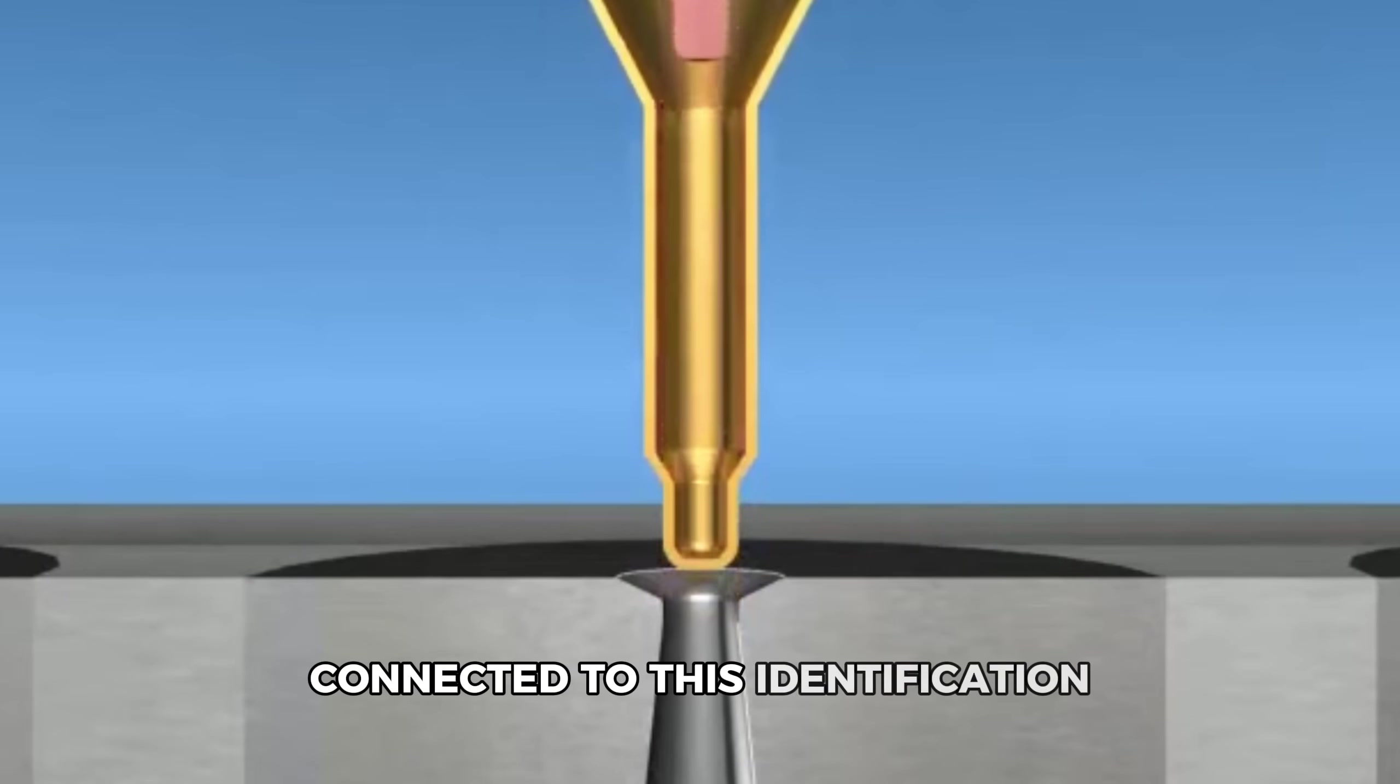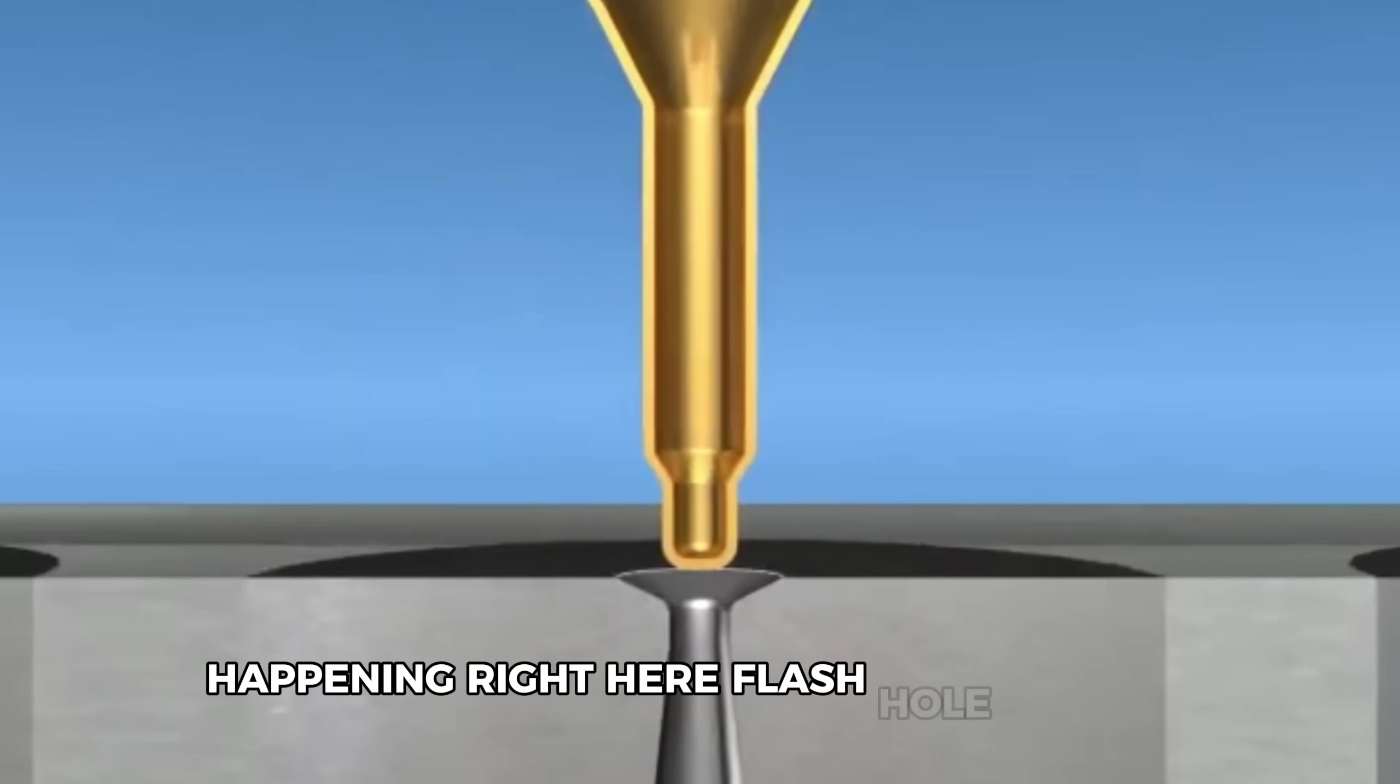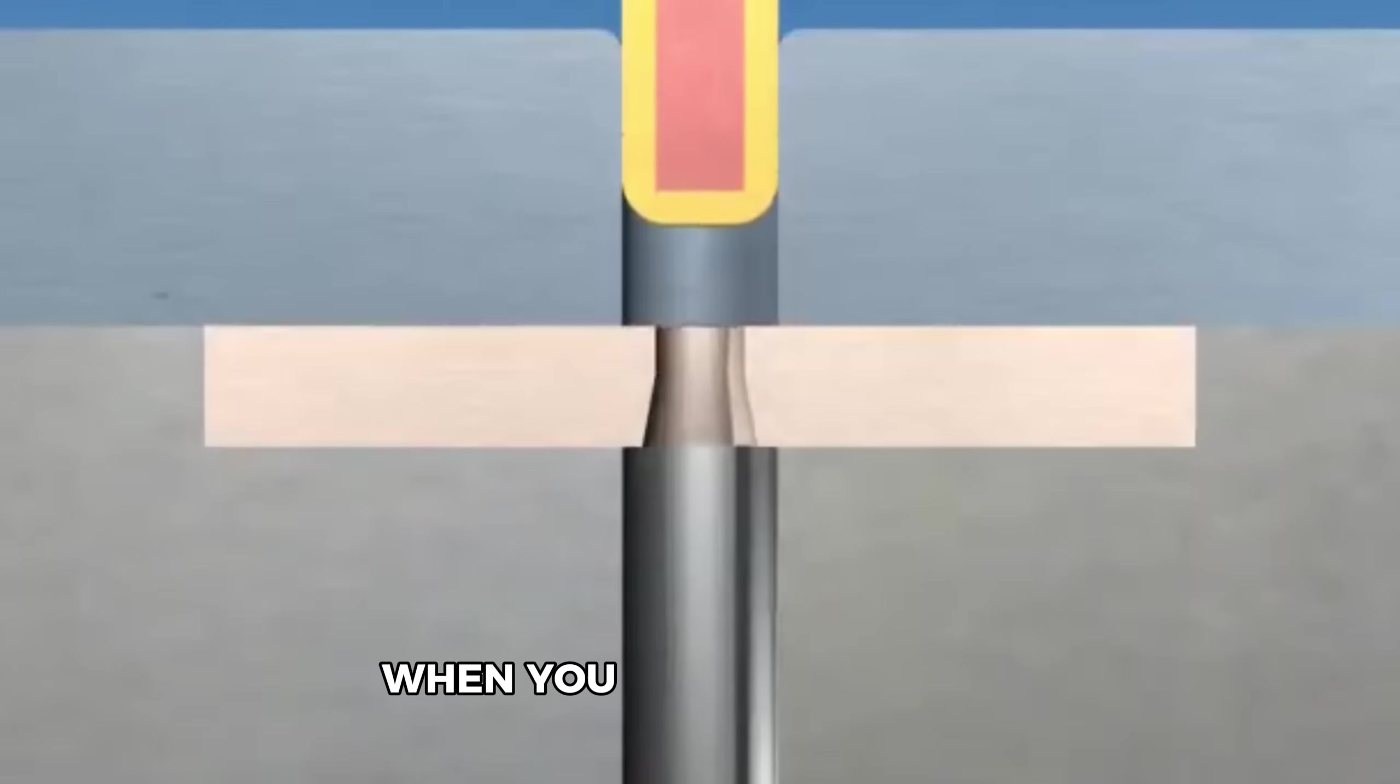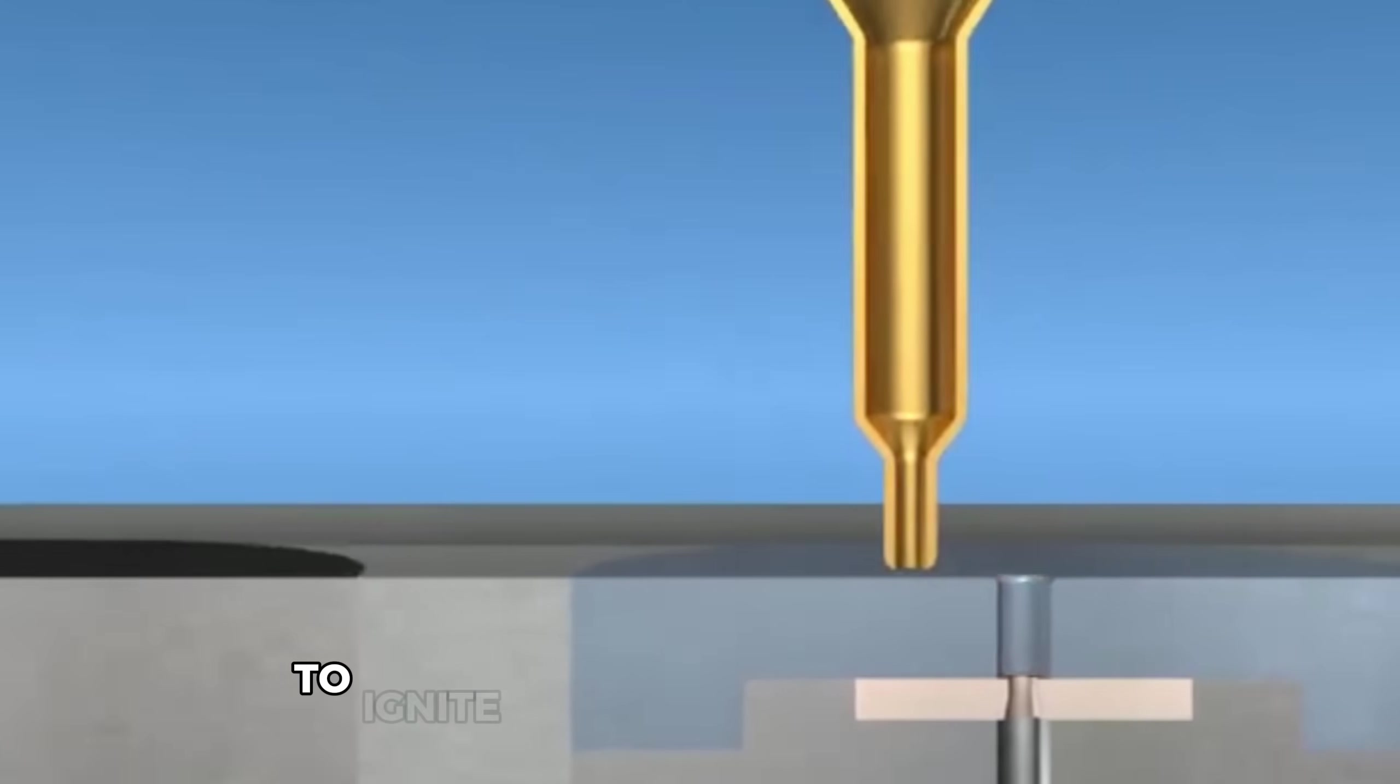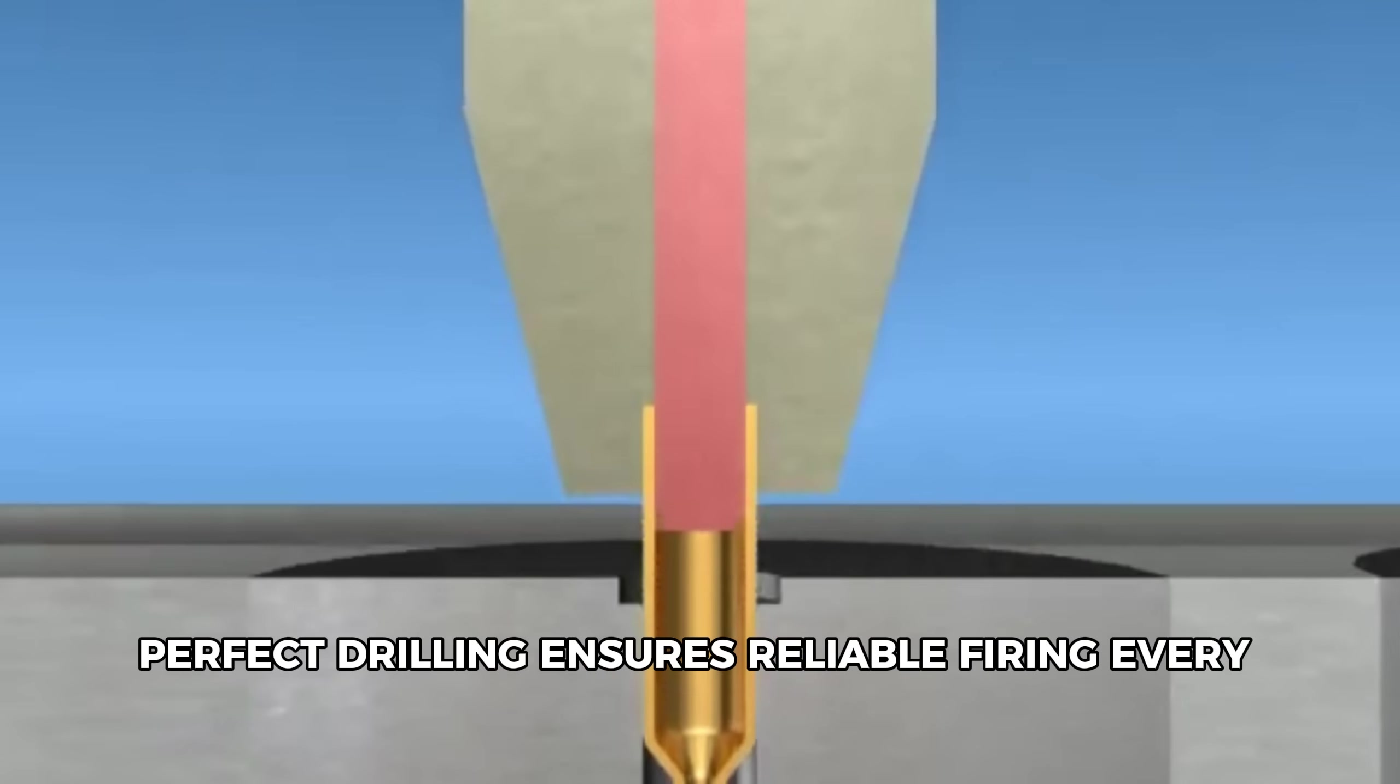Connected to this identification is one of the most precise operations happening right here: flash hole drilling. This tiny channel serves as the vital pathway for ignition. When you pull the trigger, the firing pin hits the primer, creating a small flame that travels through this flash hole to ignite the main powder charge. Perfect drilling ensures reliable firing every time.